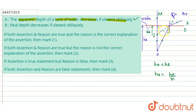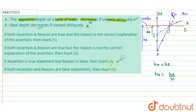Now analyzing the reason: the reason says the apparent depth decreases because the real depth decreases. However, the real depth does not actually decrease. If this is a tank and this is the bottom point, the real depth remains the same — the bottom only appears to be raised due to refraction of light. So the reason is false. The correct answer is that assertion is true but the reason is false.